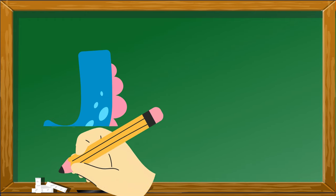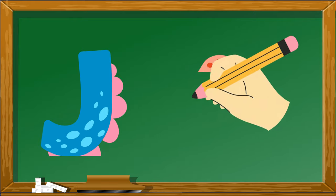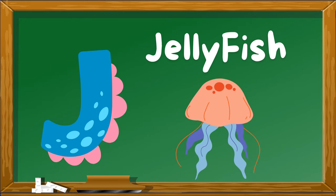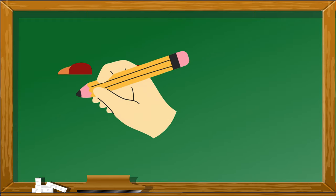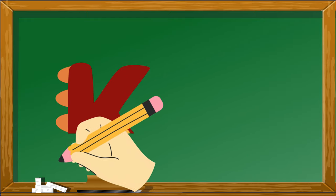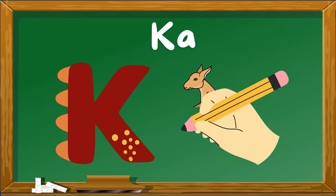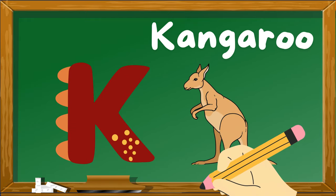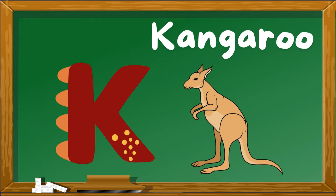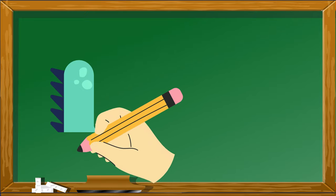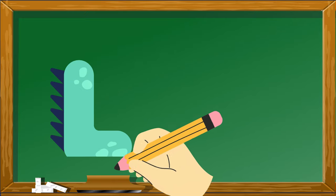J is for Jellyfish. K is for Kangaroo. L is for Lion.